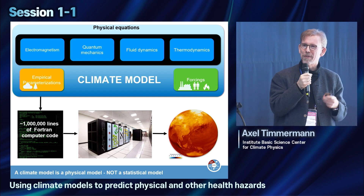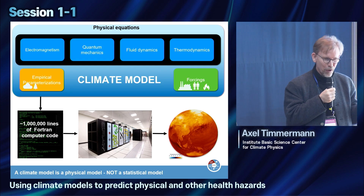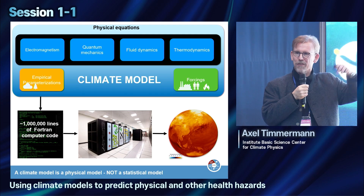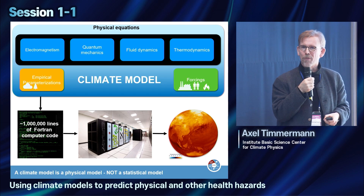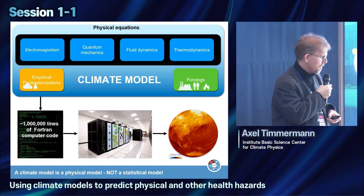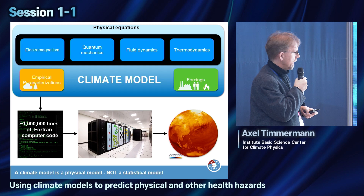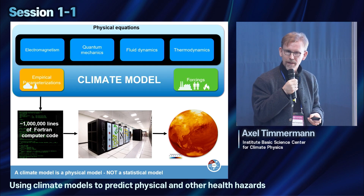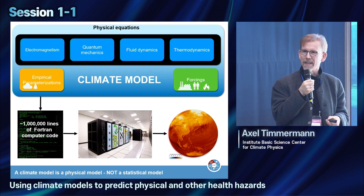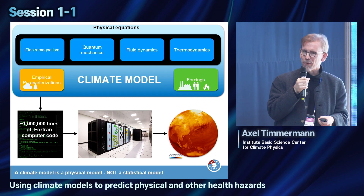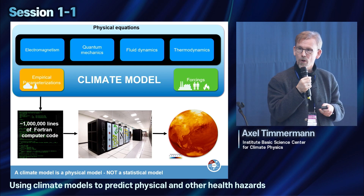What is a climate model? There is a bit of a misconception in the general public. Very often people think we take past climate data and just extrapolate them into the future like a statistical model. That's not correct. A climate model is not a statistical model; it's a physical model. Essentially it's a computer code — usually one to two million lines of code — developed by many researchers. It solves the equations of the climate system.